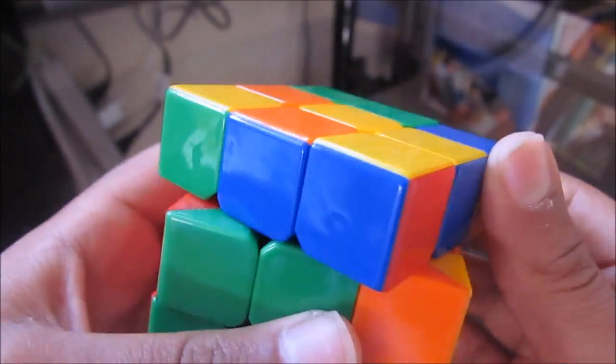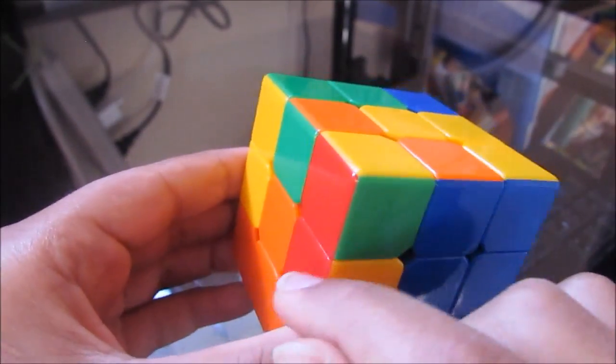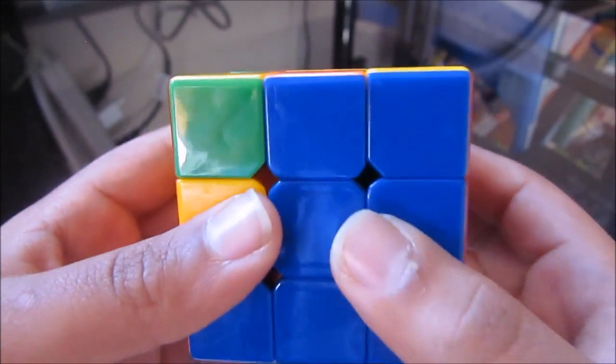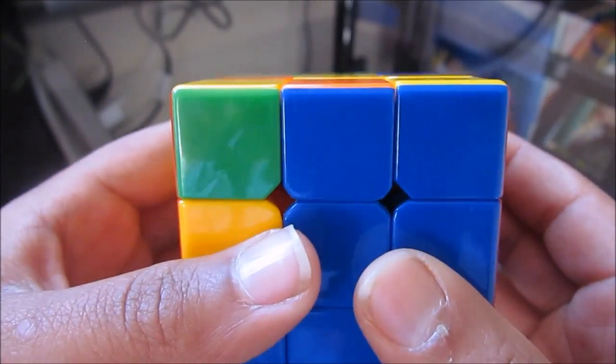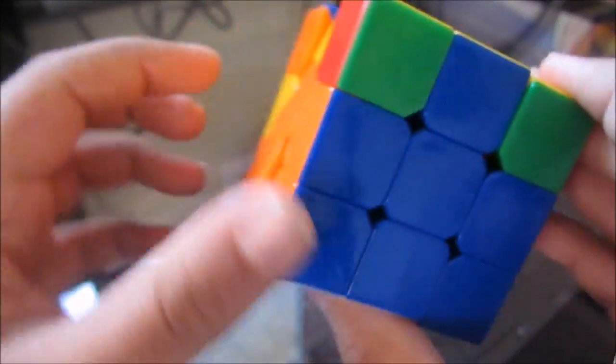Now let's put that piece in the correct place. So this is blue and orange. We want to put it in here. So just use the algorithm U I L I U L U F U I F I. And it's in.